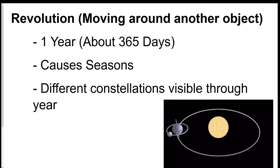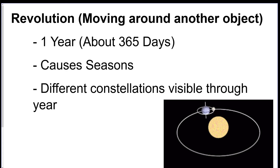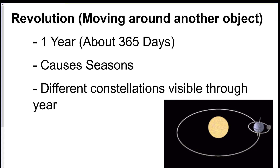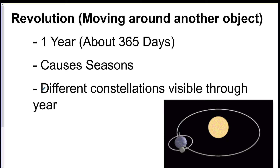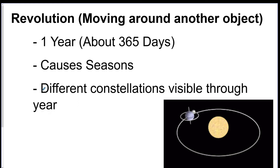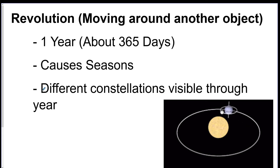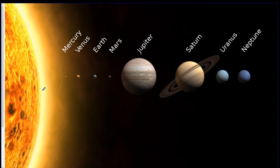Next up we have revolution, which is sometimes confused with rotation. This is the act of moving around another object. It takes about a year, which is 365 earth days. It causes the seasons to change throughout the year, and also different constellations are visible through the year — in spring there are different constellations than in winter because we're literally in a different point in space. You have to know the difference between rotation and revolution and what each causes.